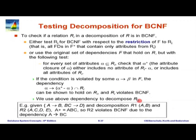Instead of computing F+ and looking for alpha→beta in F+, we take a schema Ri and do attribute closure on each subset of its attributes. Here is the same example again: B→C shows that the schema A, B, C is not in BCNF because B is not a super key. So we decompose into BC and AB. This decomposition is now in BCNF — everything is binary — and we are done.